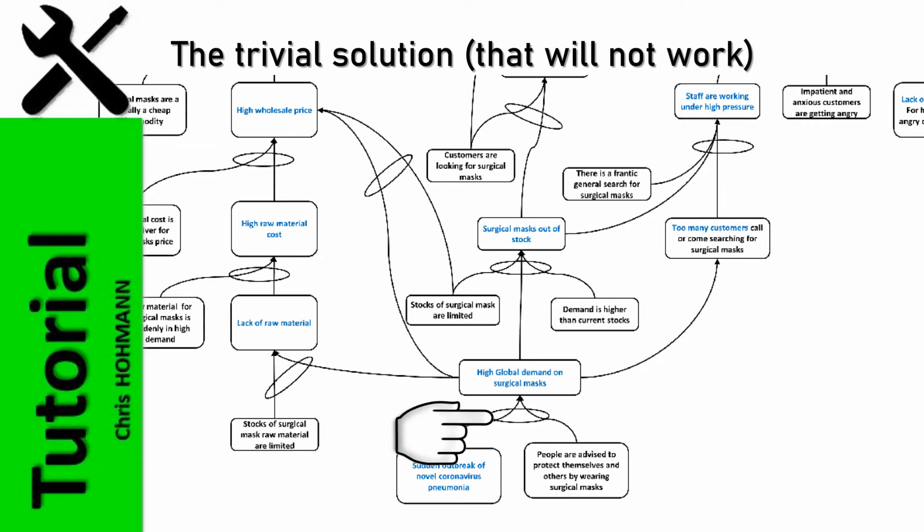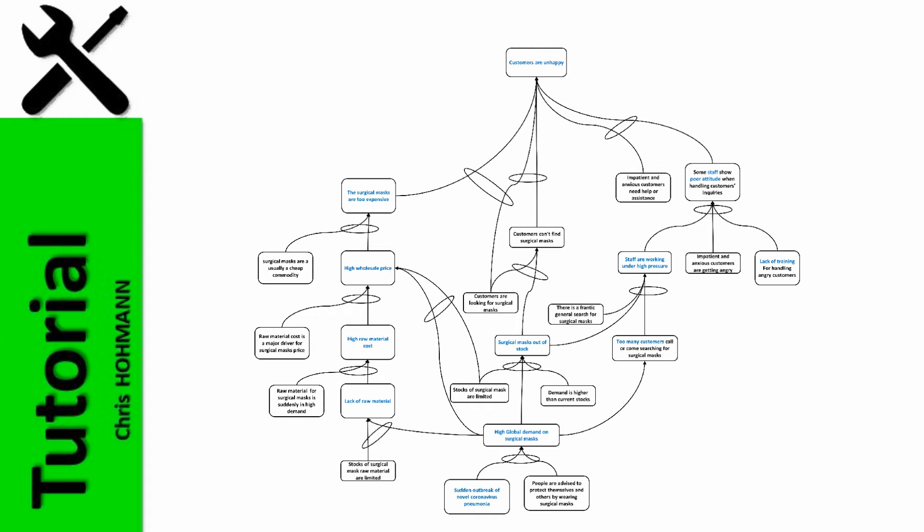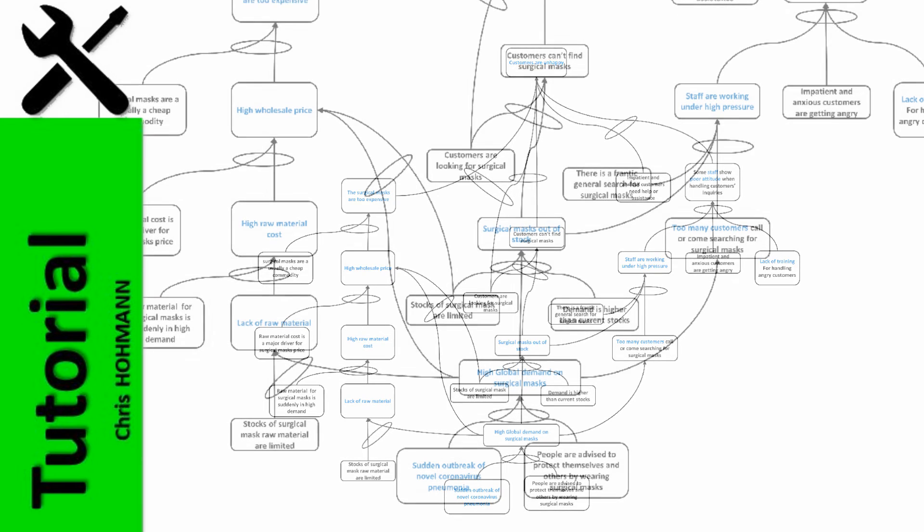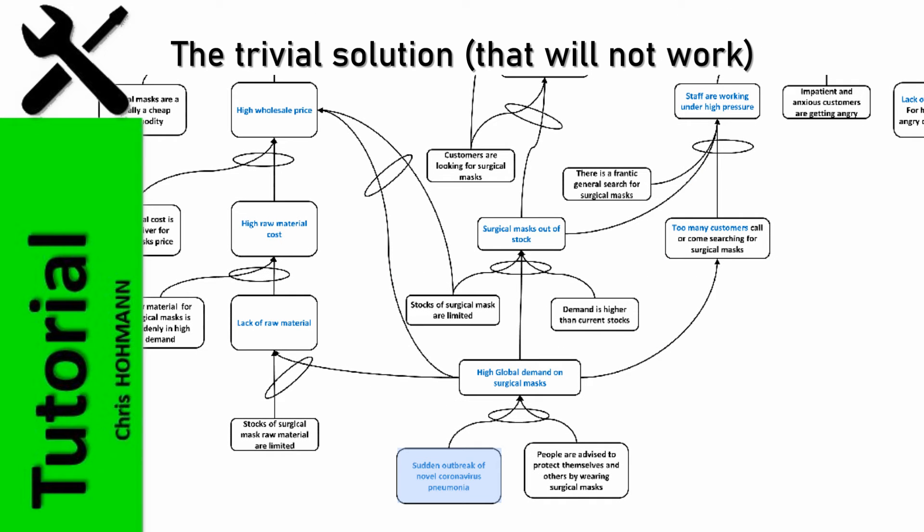This is because of the AND connector, signifying that the sudden outbreak and people being advised to wear masks must combine simultaneously to lead to high global demand on surgical masks. As the sudden outbreak of a pandemic is beyond control, the only option is to hide the information about surgical masks. Now, this solution will not work because it lies beyond the span of control of a company and even a government.